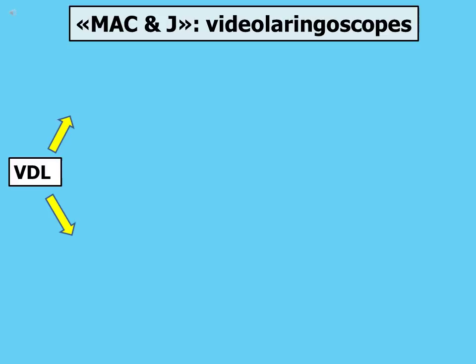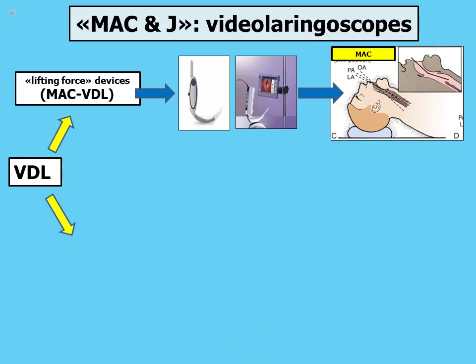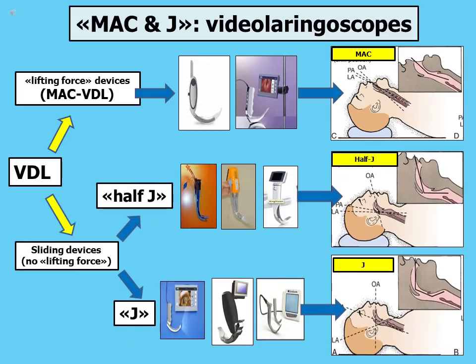There are many kinds of video laryngoscopes. The MAC and J model suggests which one fits the patient position you are going to adopt. If you are working in MAC position, you should choose a MAC video laryngoscope that needs your lifting force. If you are working in half-J or J position, you should choose sliding devices which don't need your lifting force — half-J video laryngoscopes for half-J position, or J video laryngoscopes for J position.